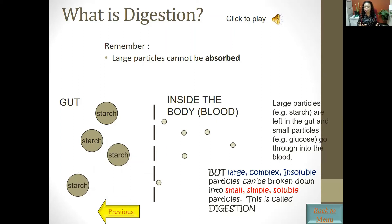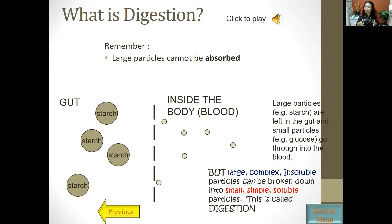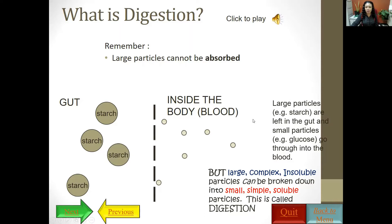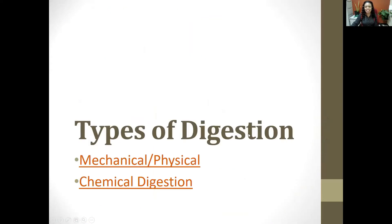Digestion is about breaking down large, complex, insoluble particles into small, simple, soluble ones. 'Insoluble' means it cannot be dissolved in water — and remember, about 90% of blood plasma is water. So moving from large, complex, and insoluble to small, simple, and soluble is essentially what digestion achieves.